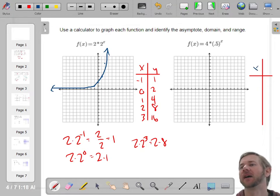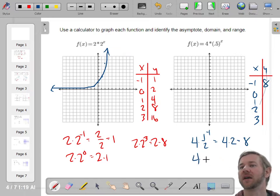Same thing here. X, Y. Let's start with, we'll do negative 1, 0, 1, 2, 3. See how that goes. 4 times 1 half to the negative 1st is the same as 1 half to the negative 1st is 2 over 1, so that would be 8. 4 times 1 half to the 0 power is 4 times 1. That would be 4. Oh, I see the pattern. It's cutting it in half. 8, 4, 2, 1, 1 half. You're just cutting it in half over and over again.